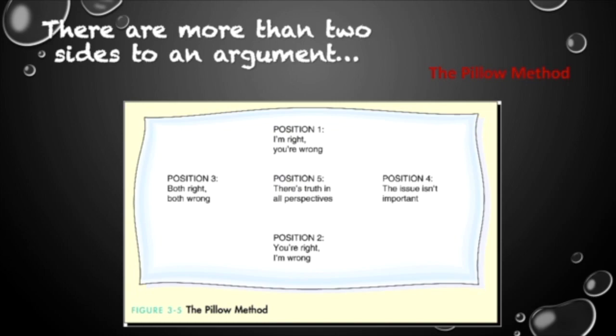So you look at the argument from various sides, position one being I'm right, you're wrong. So in this disagreement, in this circumstance where our perceptions differ, I would look at it from the perspective of, okay, how I feel is the right way to feel and how you feel is the wrong way. And what does that look like? What are the details to that?